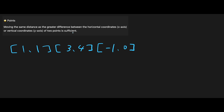Let's look at the example in the description. The input is [1,1], [3,4], and [-1,0]. We take the greater difference between two points. Starting from index one: the horizontal distance is |3 - 1| = 2, and the vertical distance is |4 - 1| = 3. So that's two versus three.